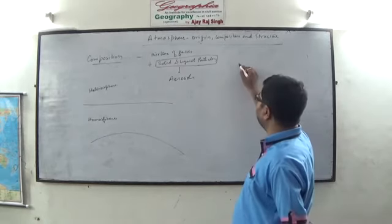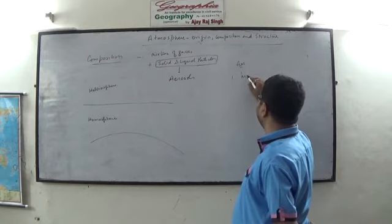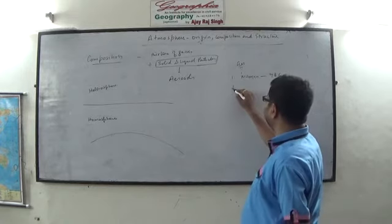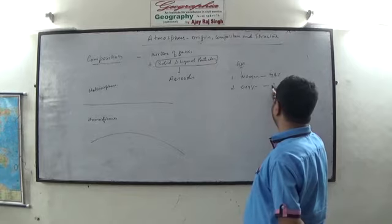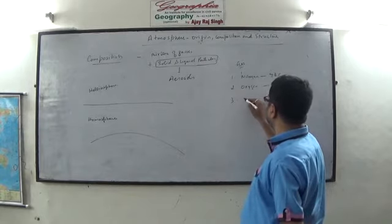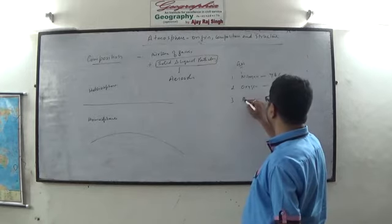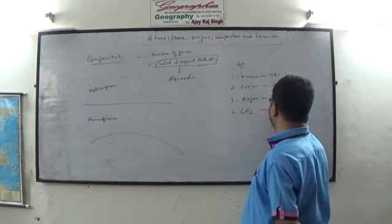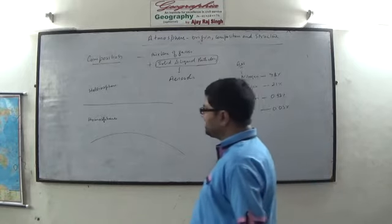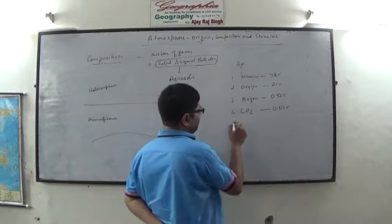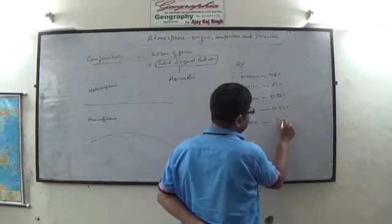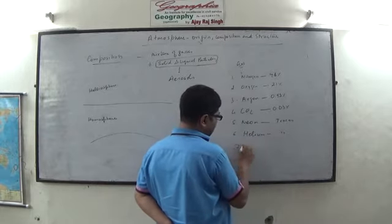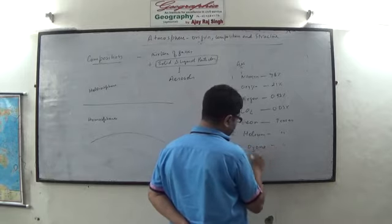The most important gas making up the atmosphere is nitrogen, comprising 78% of atmospheric gases. The second most important gas is oxygen at 21%, third is argon at 0.93%, and fourth is carbon dioxide at 0.04%. After this, the proportion of gases is very small — neon, helium, ozone, and hydrogen in decreasing traces.